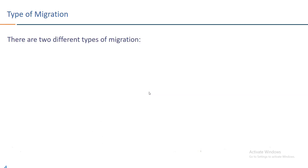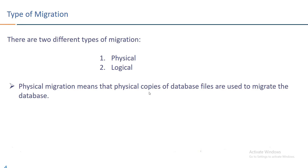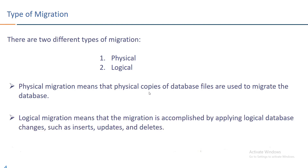There are two different types of migration in general: physical migration and logical migration. Physical migration means that a physical copy of database files is used to migrate the database. Logical migration means the migration is accomplished by applying logical database changes such as inserts, updates, and deletes.